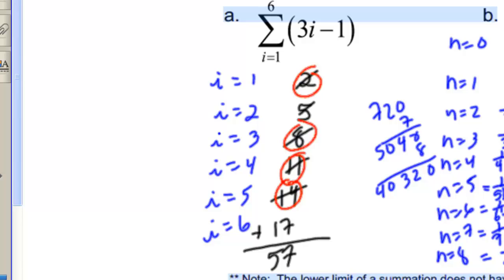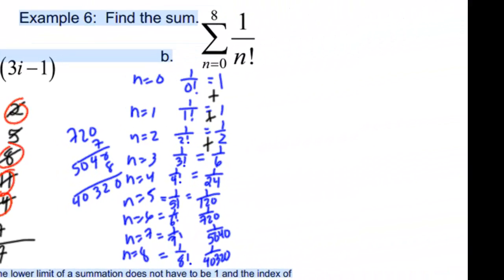Now, we could use a formula for that because that is an arithmetic term. But notice in example b, example b is not arithmetic nor is it geometric. So the only way to compute that sum is the long way. I would have to substitute in all of the values from 0 to 8 as you've seen. And then I physically would have to add all of those terms.